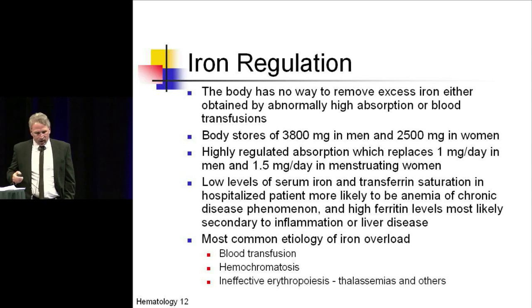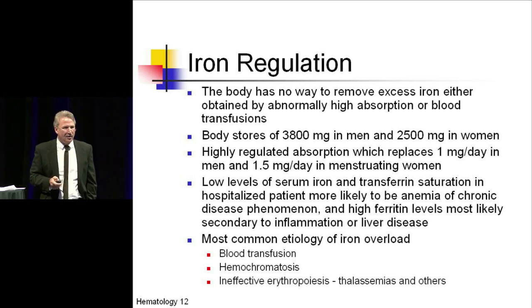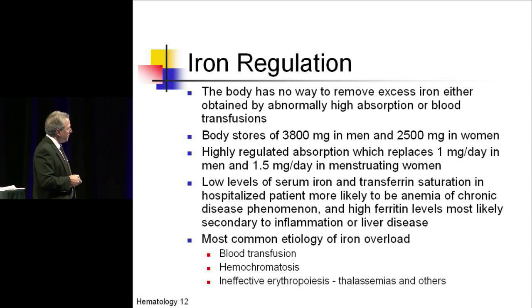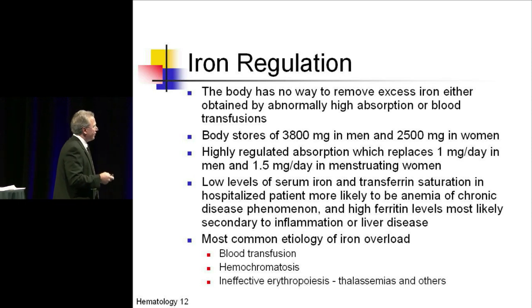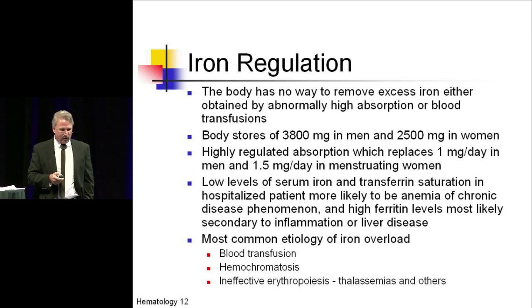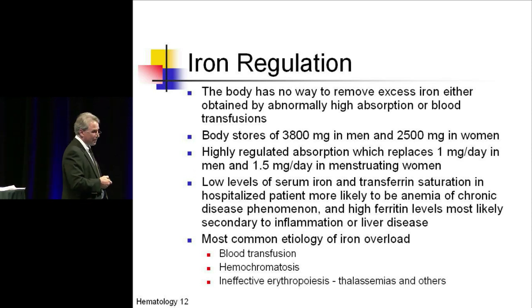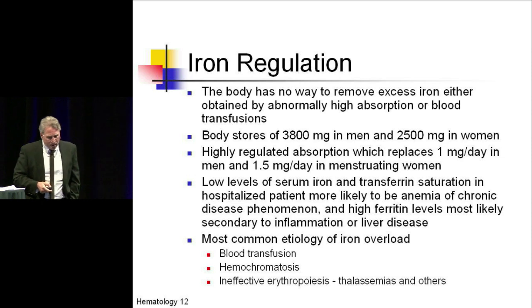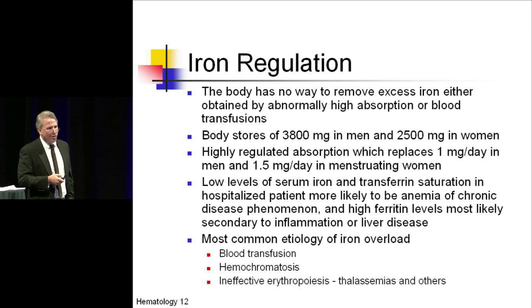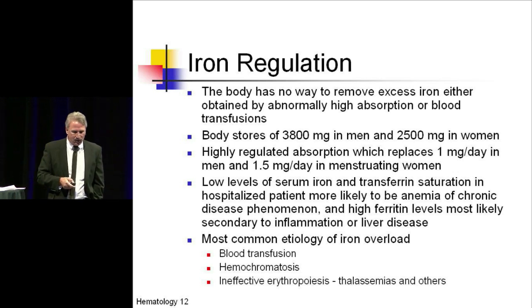In terms of iron regulation, if we're not deficient, we all store between two and a half and four grams of iron in our bodies. We really have no good way of getting rid of it — women who menstruate lose some, and we lose a little in stool, skin shedding, and sweat — but there's no well-organized way to eliminate iron. We do have a fairly highly regulated absorption process that replaces the one to one and a half milligrams we use daily.